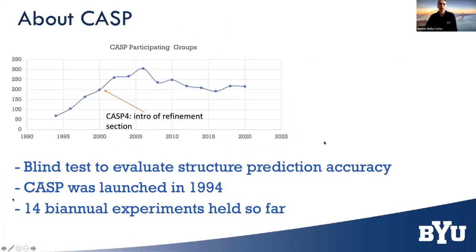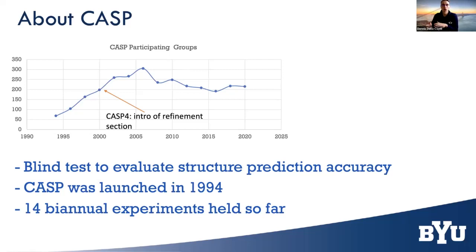Let's look into CASP. I assume most of you have heard of this — it's an experiment that's been ongoing for almost 30 years. Every two years, this Critical Assessment Center for Structural Prediction puts out a community challenge where they ask the community to computationally predict the three-dimensional structure of a protein given only the amino acid sequence. Typically you don't have any experimental information, just the sequence.